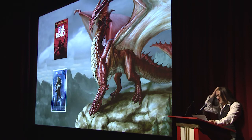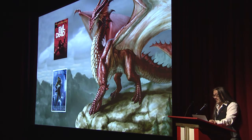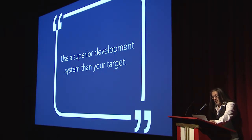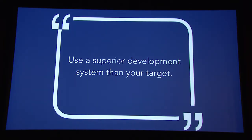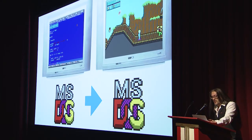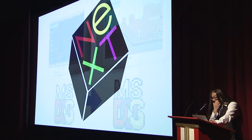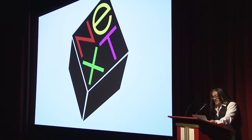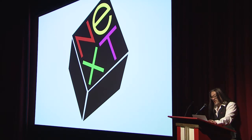The ideas for Doom came from our D&D campaign, which was full of demons. We also loved the movies Evil Dead and Aliens. Doom's design was a mashup of a bunch of ideas. At the beginning of Doom's development, we created a new core principle: use a superior development system than your target to develop your game. Before Doom, we were making games for DOS while developing using DOS computers. We developed Doom using NeXTStep workstations — far superior to DOS. NeXTStep eventually turned into OS X and then macOS.